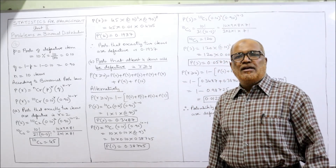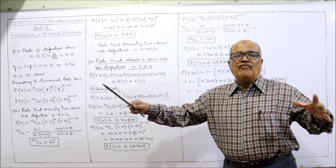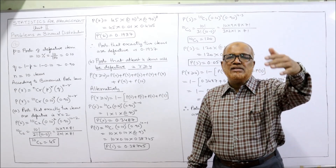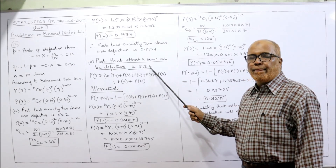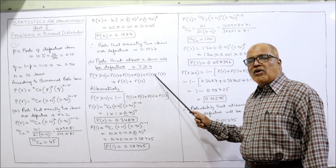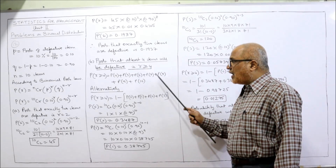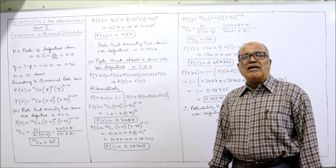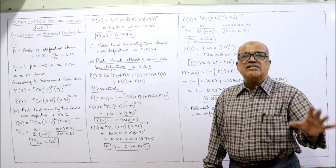For the second question — at least 4 items defective — R ≥ 4, meaning we need P(4) + P(5) + P(6) + P(7) + P(8) + P(9) + P(10). That is 7 calculations — a lengthy, time-consuming process. So we use an alternative shortcut method to get the same answer in less time.